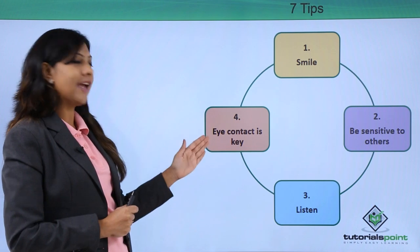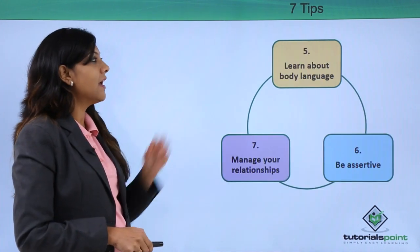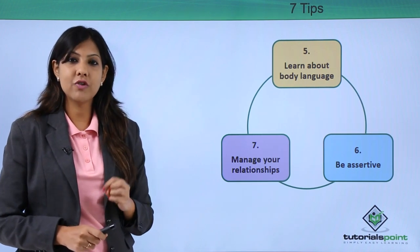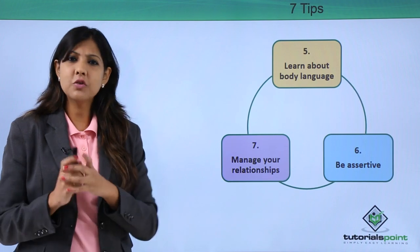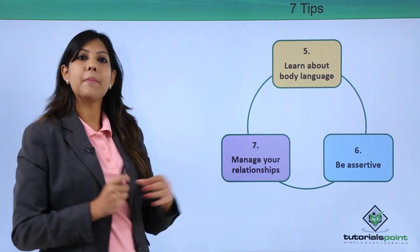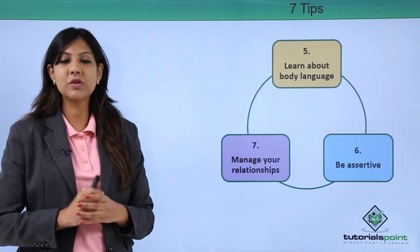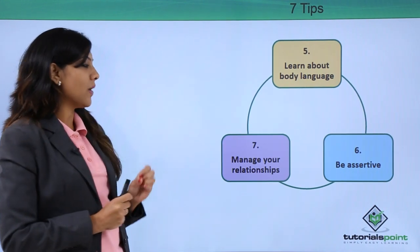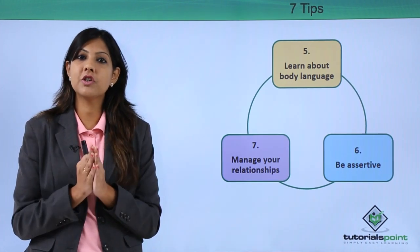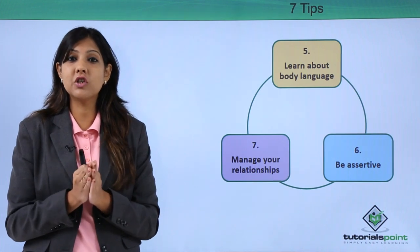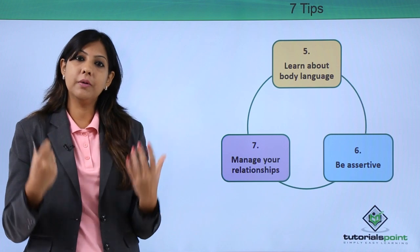The fourth tip is eye contact — it is very important when talking to people. Fifth is learn about body language — observe the positive and negative body language in a person, watch their actions. Sixth is be assertive — be firm and polite but assertive, a quality everyone should have. The seventh is manage your relationships — do not spread yourself so thin that you cannot give justice to any one relationship.